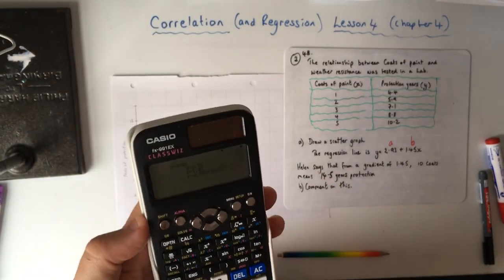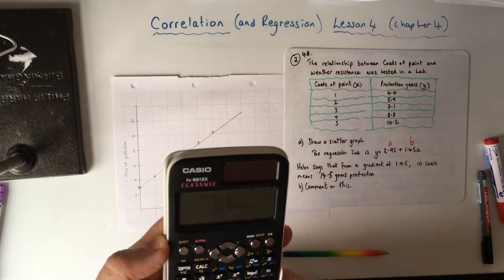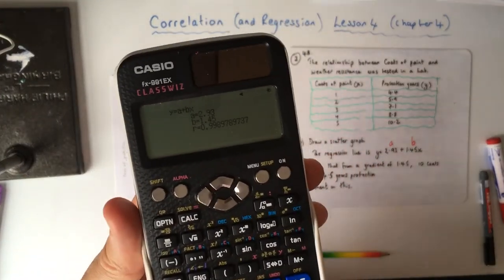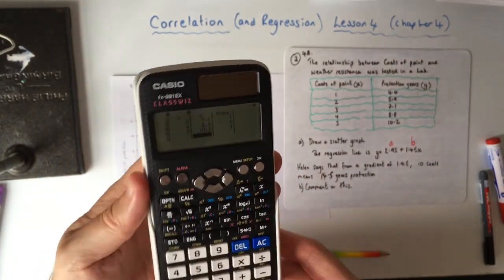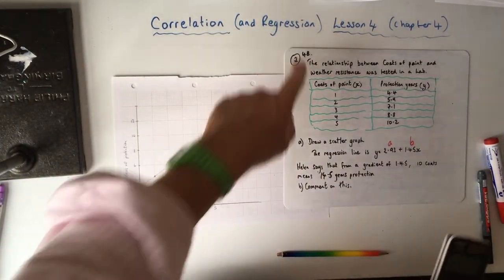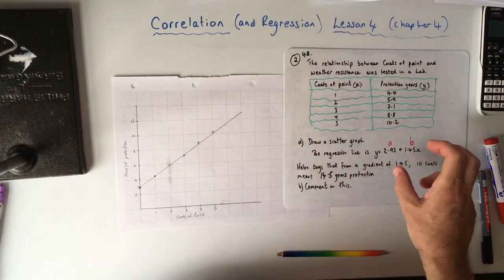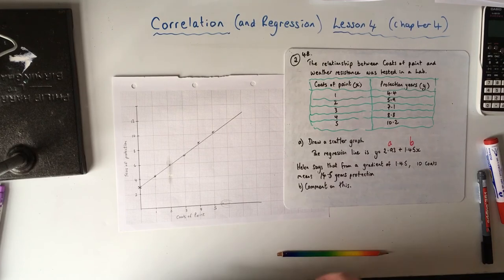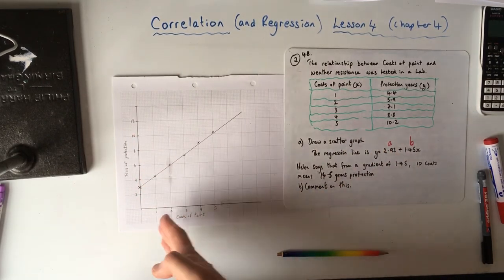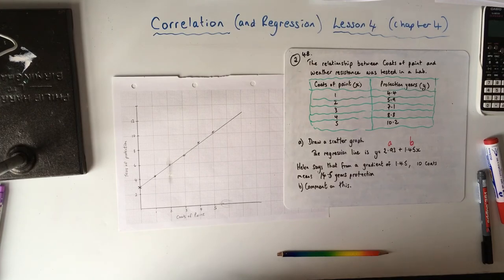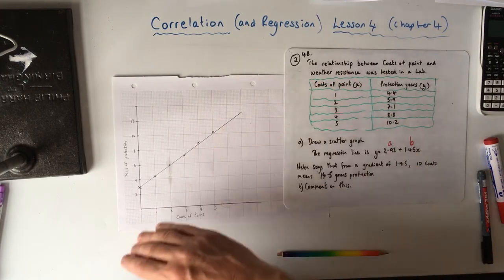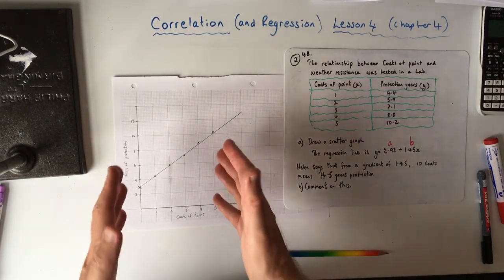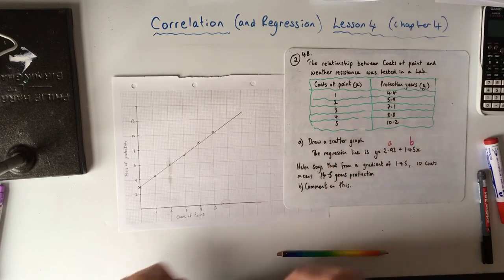They will always give you those values in the exam. They're not asking you to calculate it manually, but you do need to be able to enter it into your calculator to get it. So remember: regression is just a precise line of best fit in the form Y = a + bx. A is the Y-intercept and B is the gradient. Interpolation: good. Extrapolation: not so good — try to avoid it, it's outside the range of data.